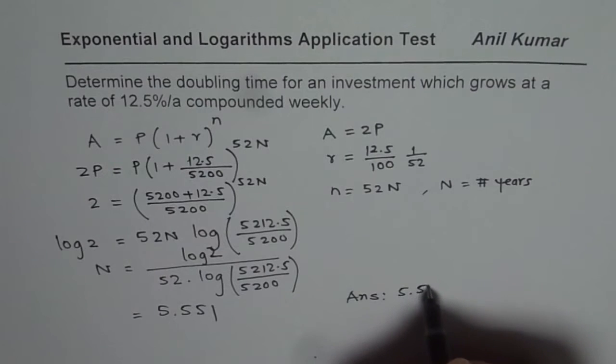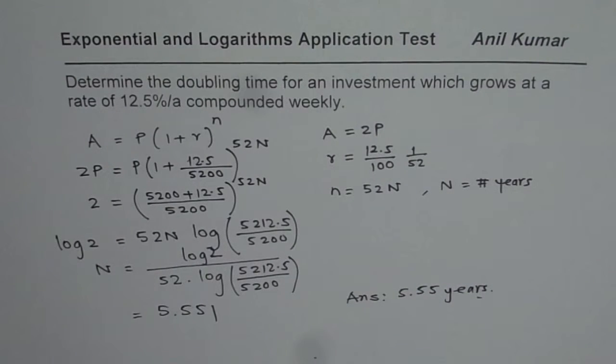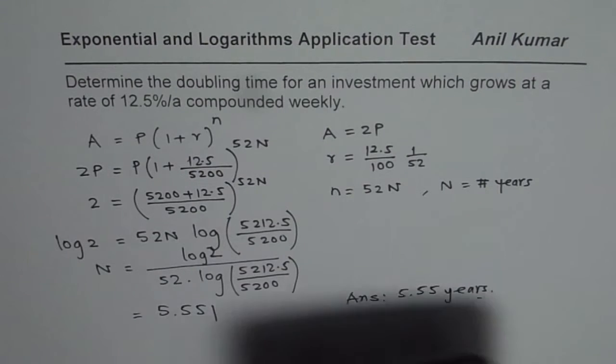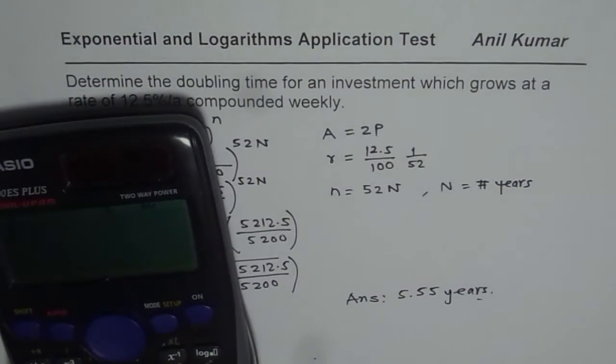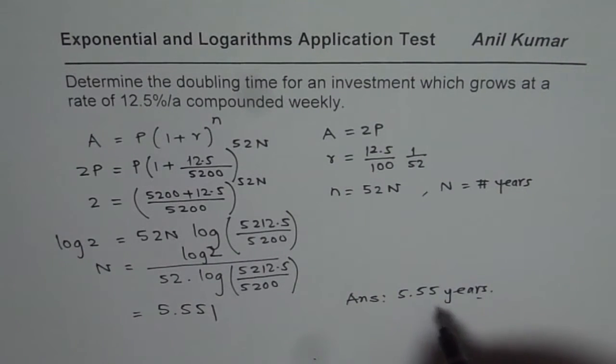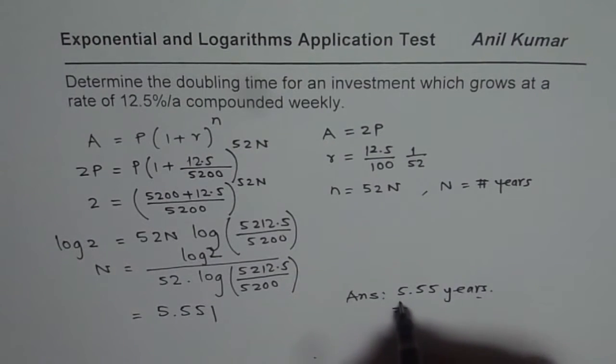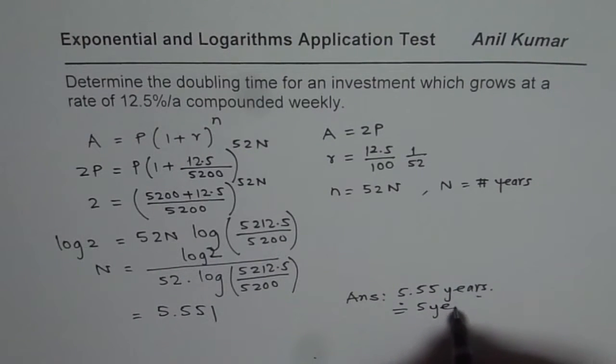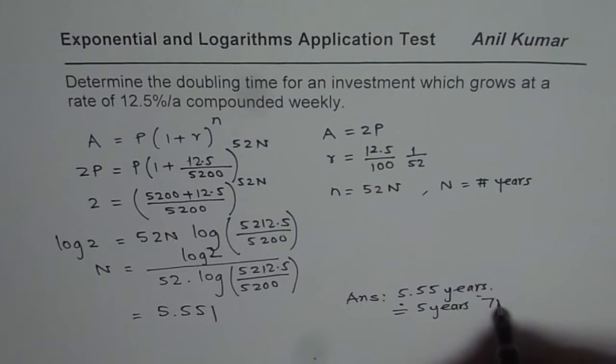It is in 5.55 years. At times you may have to write your answer in months and years. In that case, 0.55 should be multiplied by 12, since there are 12 months. So you can approximate, it is more than around 5 years and 7 months. You can say approximately 5 years and 7 months.